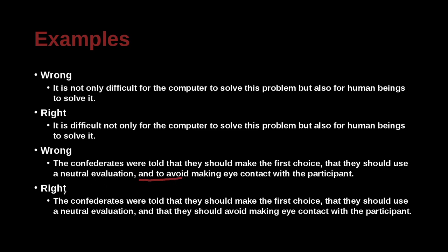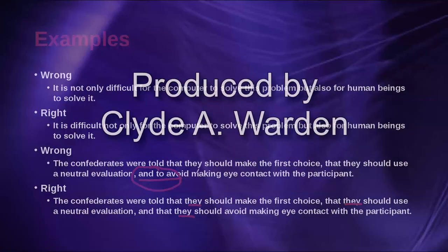The correct version is: 'The Confederates were told that they should make the first choice, that they should use a neutral evaluation and that they should avoid making eye contact with the participant.' In the error, we are missing 'they,' which makes it unclear who is doing this. The repeated 'that they should' clarifies the parallel structure and makes the subject unambiguous.